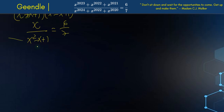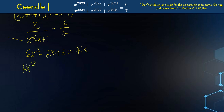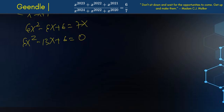Now we cross-multiply: 7x equals 6 times (x squared minus x plus 1), which gives 6x squared minus 6x plus 6 equals 7x. Rearranging, we get 6x squared minus 13x plus 6 equals 0. This is a quadratic equation.